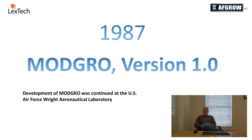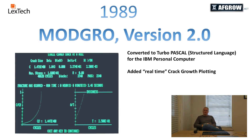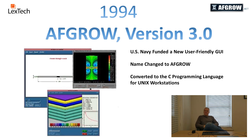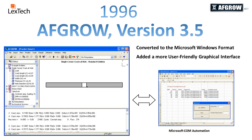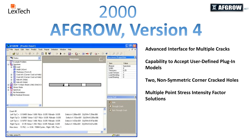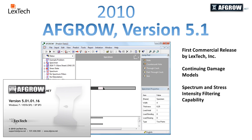I soon took a job at Wright-Patterson Air Force Base, where I continued to develop ModGRO. In 1989, I converted the program to Turbo Pascal and added some basic plotting capability. The U.S. Navy provided funding to develop a more user-friendly graphical interface for the UNIX platform. When the initial effort was completed, Air Force Research Laboratory management decided to call the code AFGRO. A few years later, the UNIX version was discontinued and the code was converted to the Microsoft Windows environment. Several modifications and improvements were made over the years, until AFGRO was turned over to LexTech in 2008. The first commercial AFGRO release was version 5.1 in 2010.